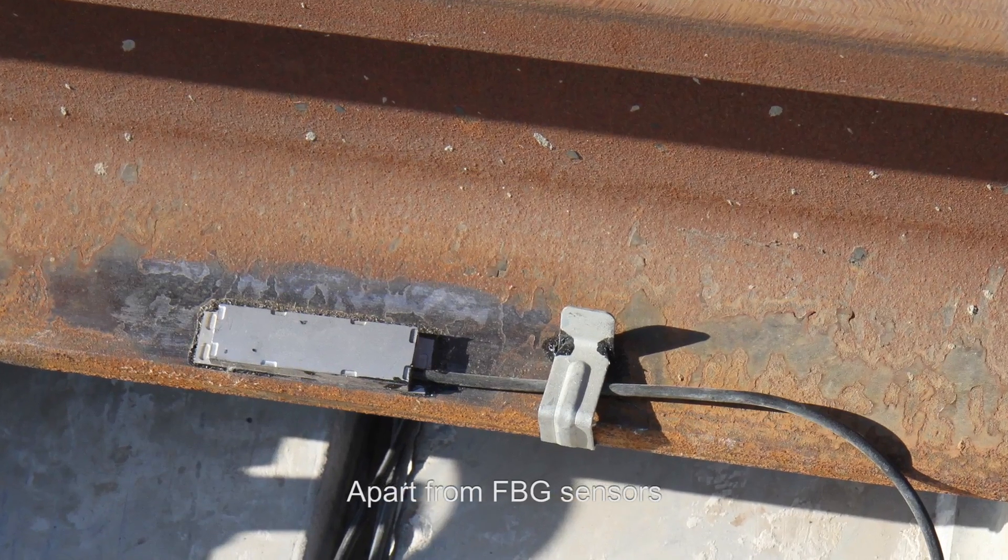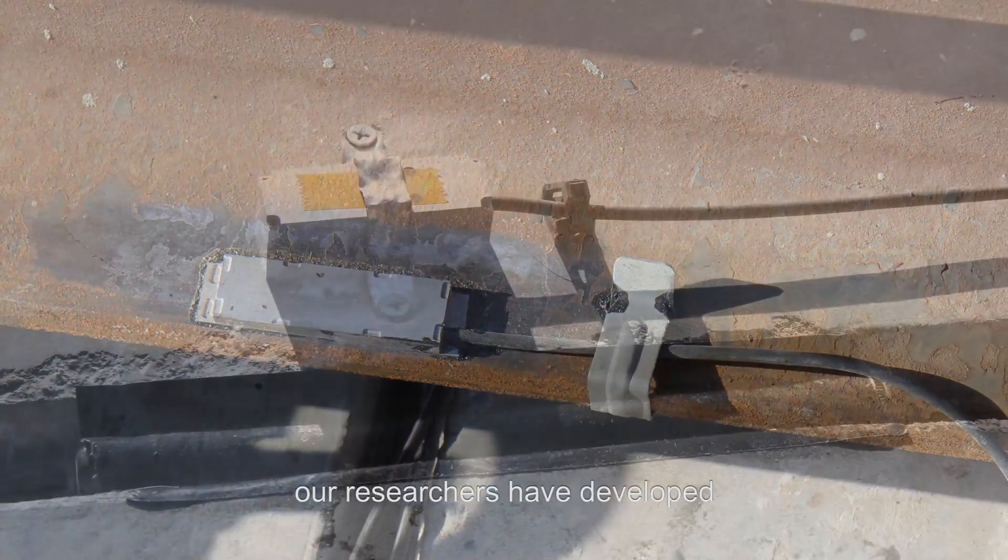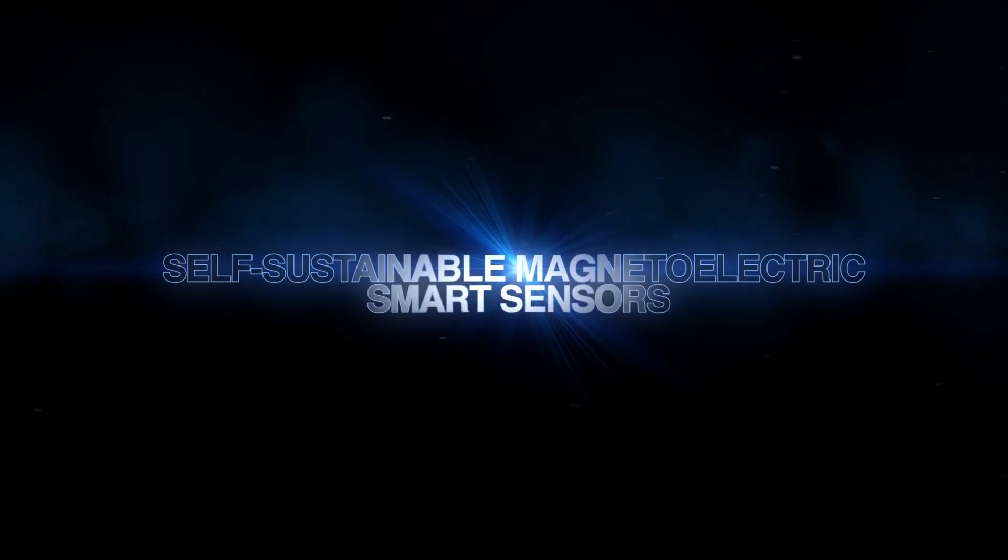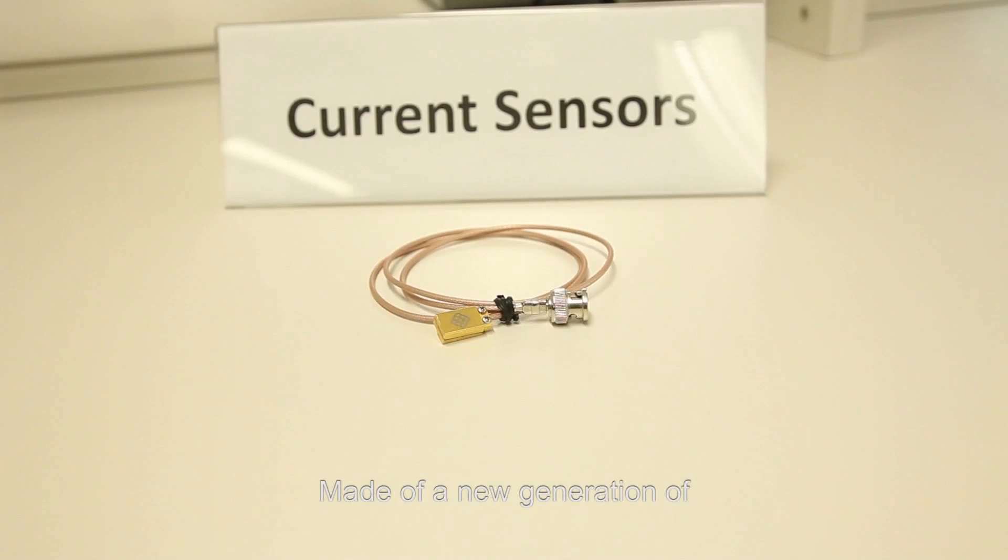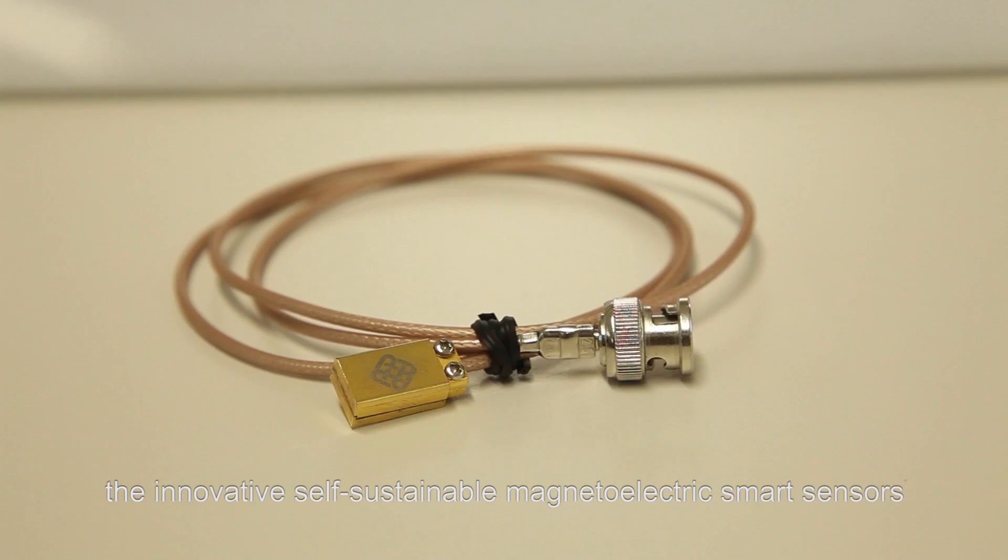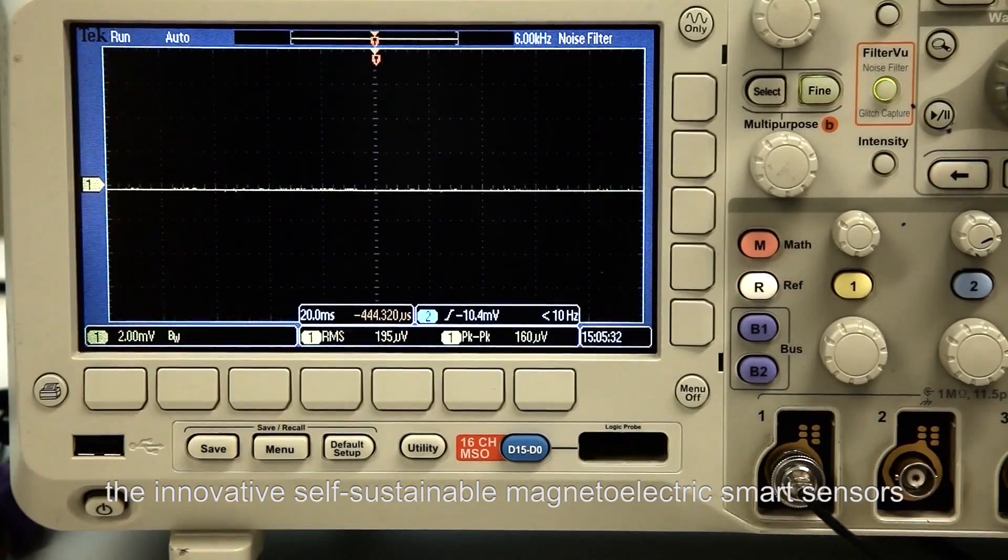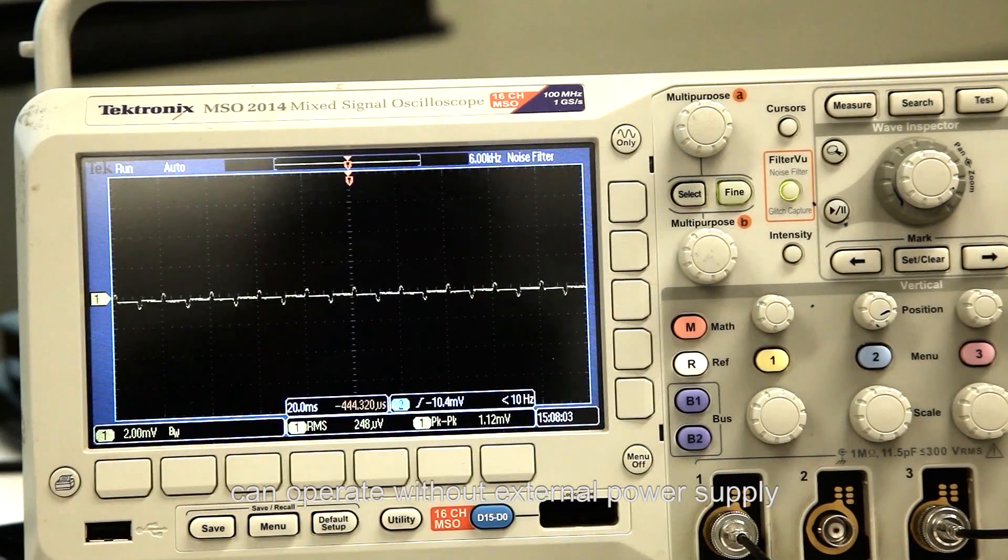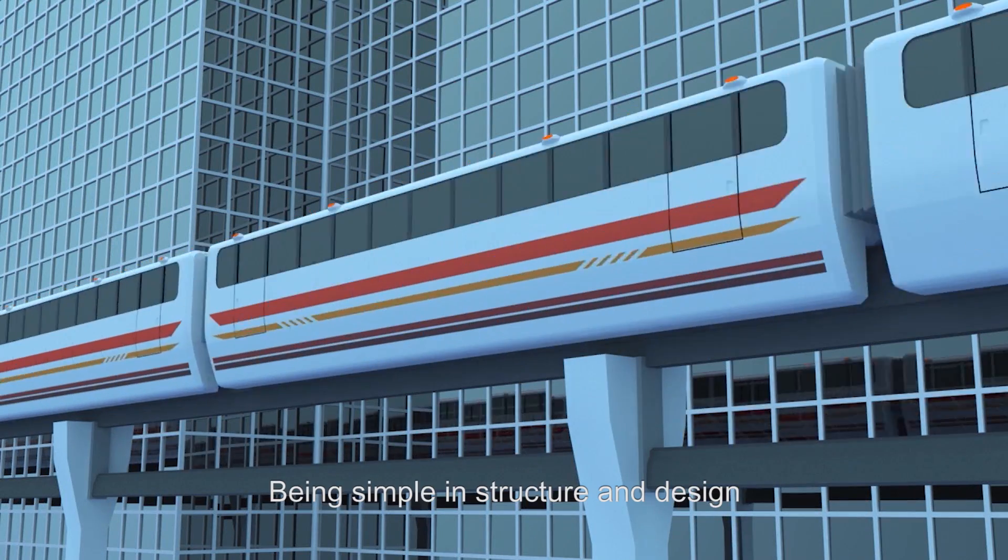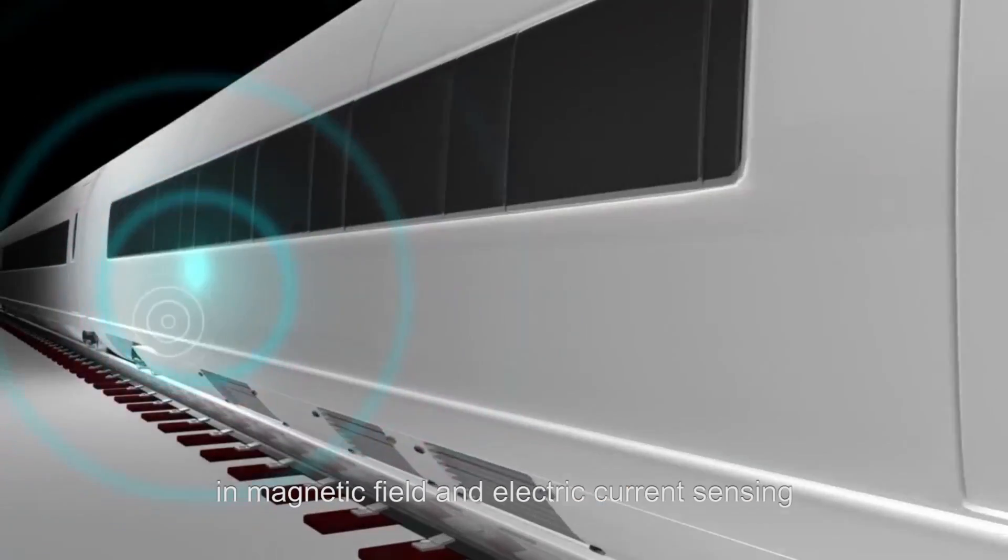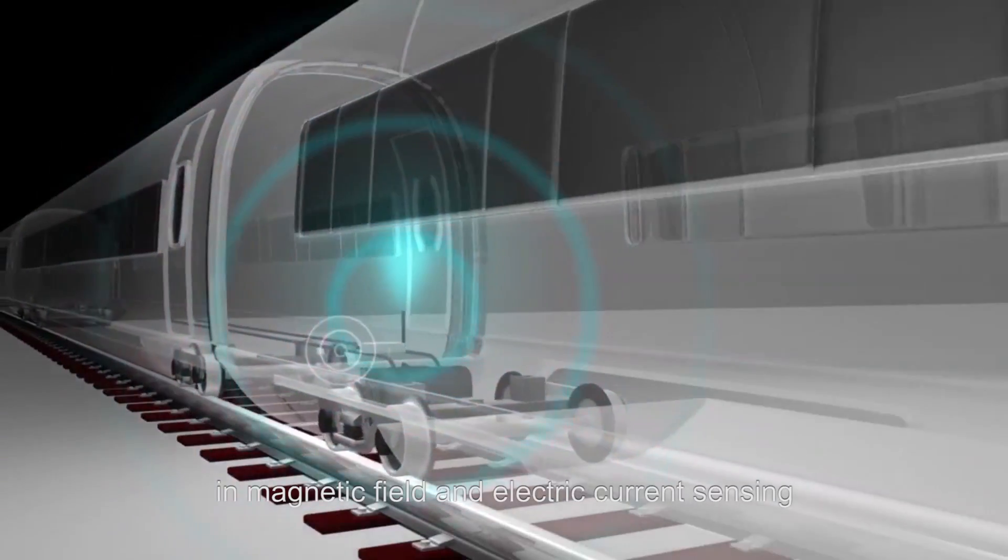Apart from FBG sensors, our researchers have developed another type of smart sensors called self-sustainable magneto-electric smart sensors. Made of a new generation of magneto-electric composite materials, the innovative self-sustainable magneto-electric smart sensors can operate without external power supply. Being simple in structure and design, they are cost-effective and are particularly useful in magnetic field and electric current sensing.